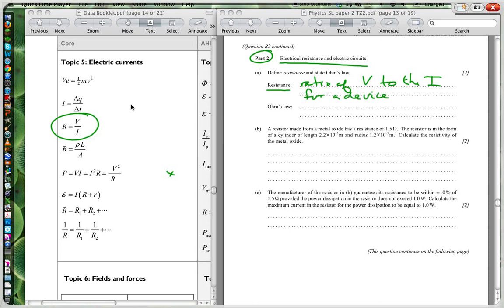That could be a resistor, some sort of load, some sort of device. Ohm's law states that for a constant temperature, the ratio of V over I is a constant for a specific device.